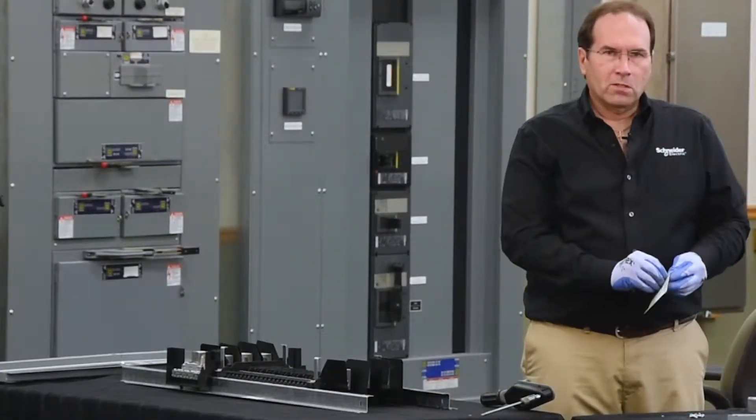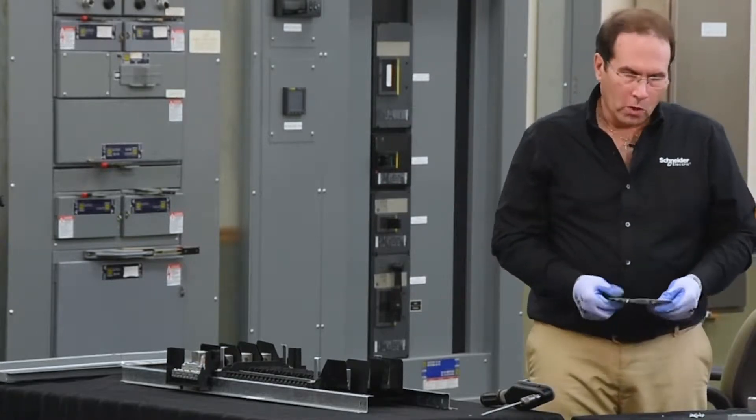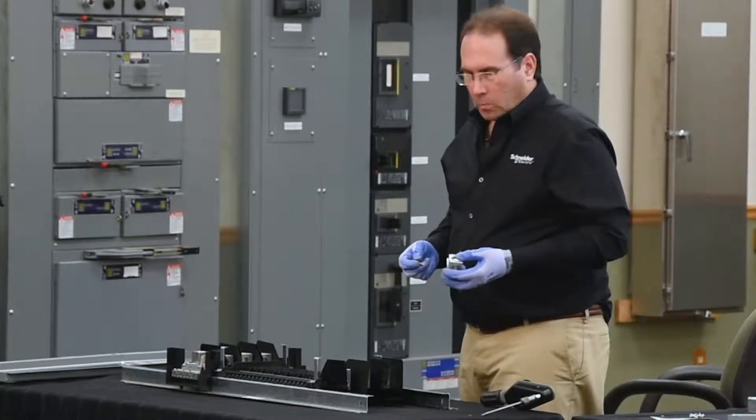Next, we'll install the neutral lug utilizing the two pieces of hardware that are left in the hardware kit, marked for neutral hardware. This will be the second neutral on the panel board.